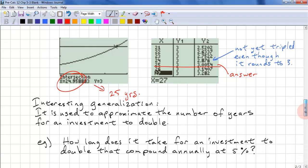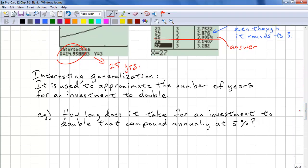Here's an interesting generalization. And it's used to approximate the number of years for an investment to double. It's called the Rule of 72. So, how long does it take for an investment to double that compounds annually at 5%? So, what we do is 72 divided by the interest rate, which is 5. And this gives us roughly 14.4 years.